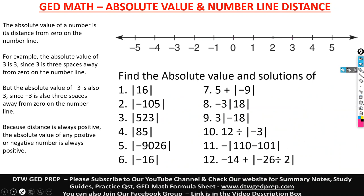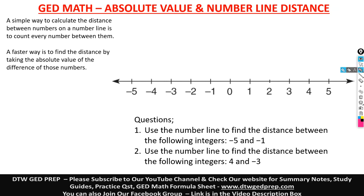Let's get on to number line. How is absolute value and number line related? There are questions like this on the GED where you see a point X and a point Y and they ask: what is the distance from X to Y? A simple way is to count every number between them, but a faster way is to find the distance by taking the absolute value of the difference of those numbers.